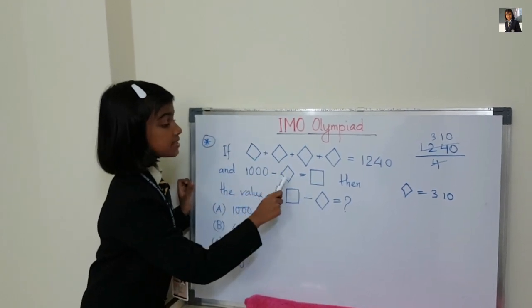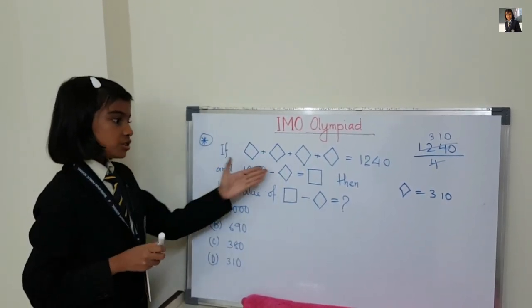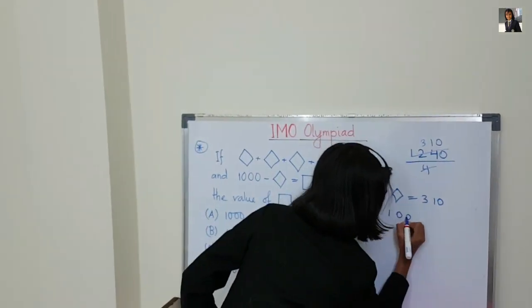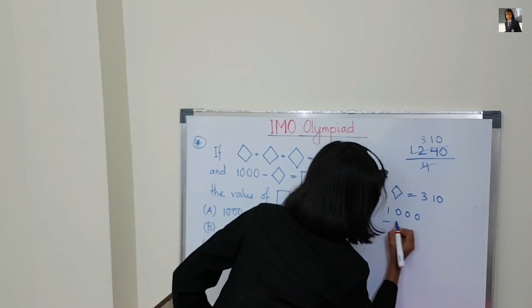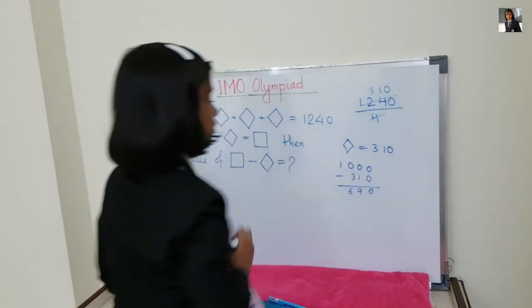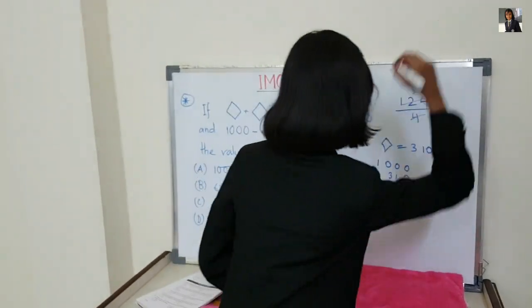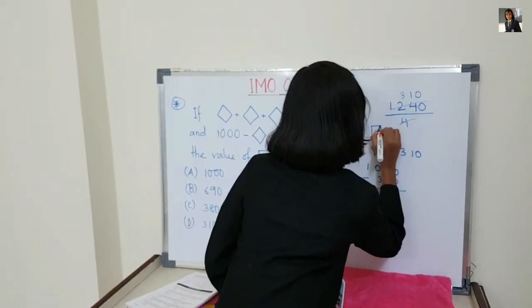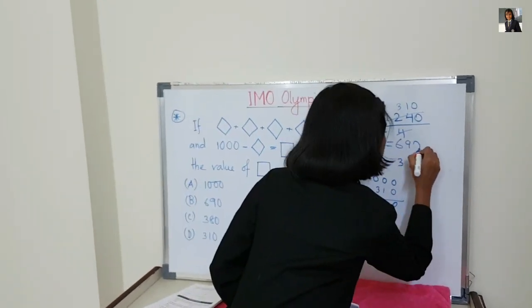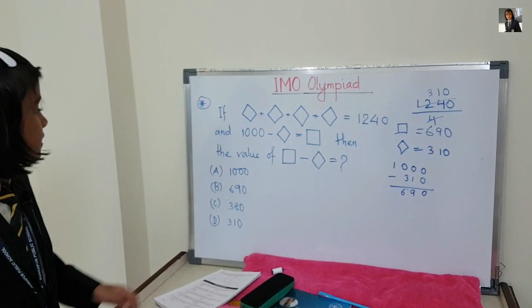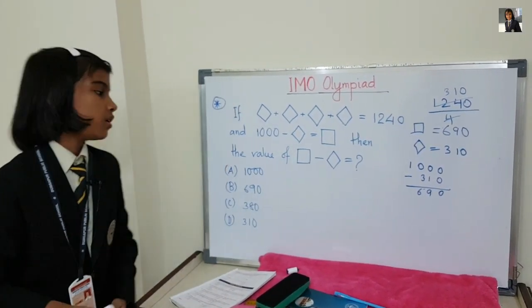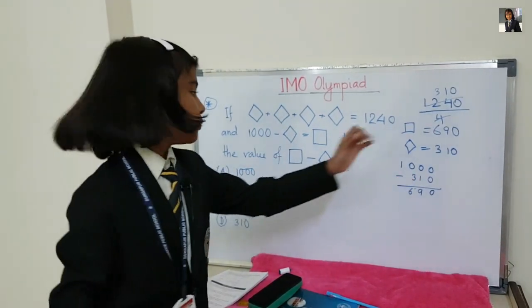Then, 1000 minus diamond = square, means 1000 minus 310 — because there is one diamond — so 1000 minus 310 is 690. The value of square is 690.